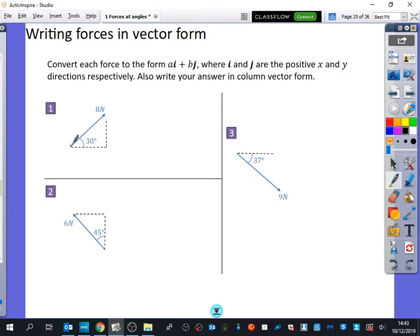So we've got three things here, and it says convert each force to the form AI plus BJ, where I and J are the positive X and Y directions respectively. Also write your answer in column vector form. So super quickly, if this vector is going upwards like this, we can see it's going to split into these two forces.